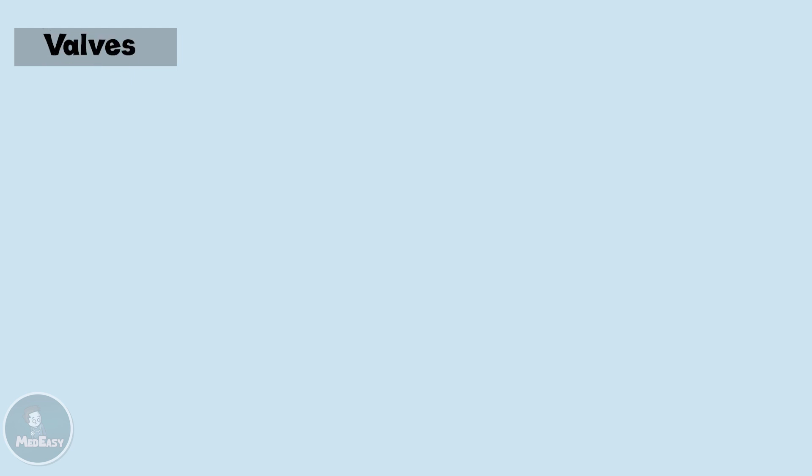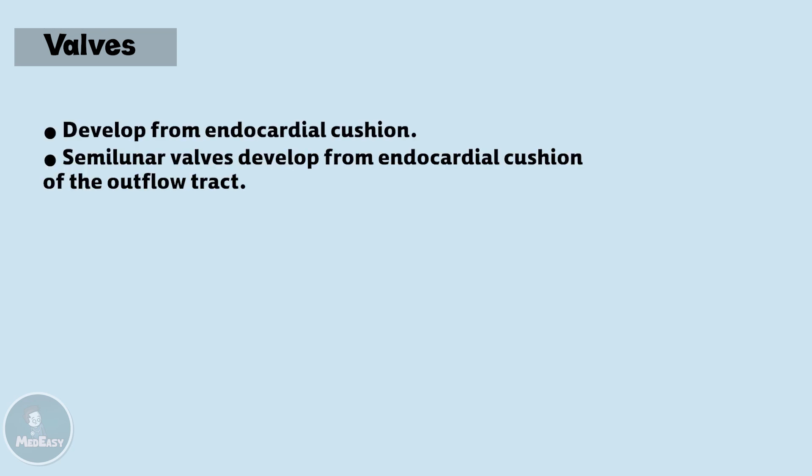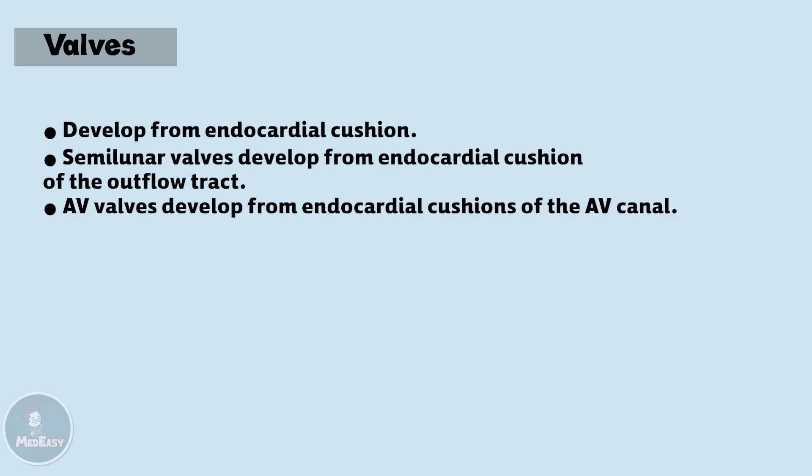Finally, the valves — whether semilunar or atrioventricular — will develop from the endocardial cushion. The semilunar valves, the pulmonary and aortic, will develop from the endocardial cushions of the outflow tract, while the atrioventricular valves, the mitral and tricuspid, will develop from the endocardial cushions of the AV canal.